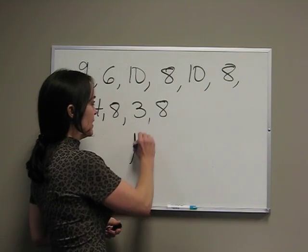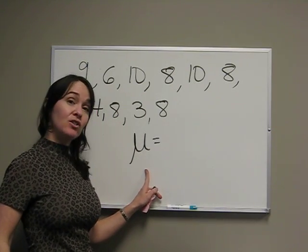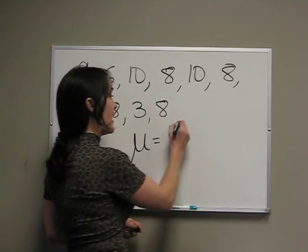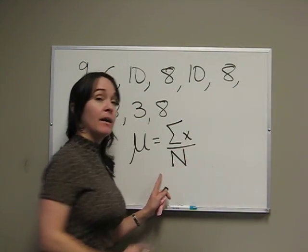The population mean is denoted by mu (μ). It's a population parameter. It's calculated by the summation of x divided by capital N.